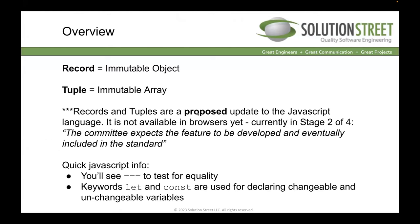Here's a quick overview. A record is an immutable object and a tuple is an immutable array in JavaScript — that's the naming for the proposed update. Records and tuples have different meanings in different environments like databases or other languages, but in this JavaScript proposal, a record is an immutable object and a tuple is an immutable array. This is a proposed update — it's not available in browsers yet. It's currently in stage two out of four, meaning the committee expects the feature to be developed and eventually included in the standard.